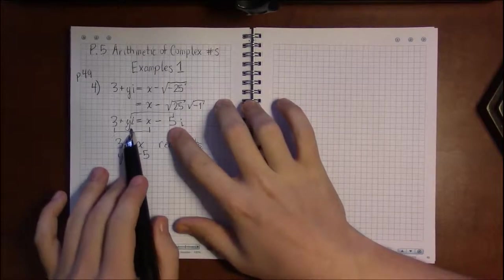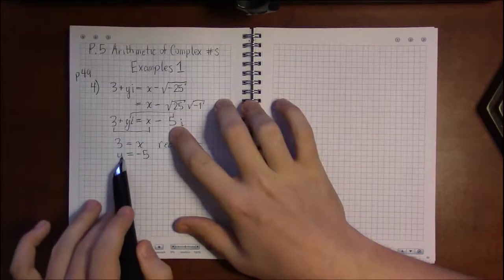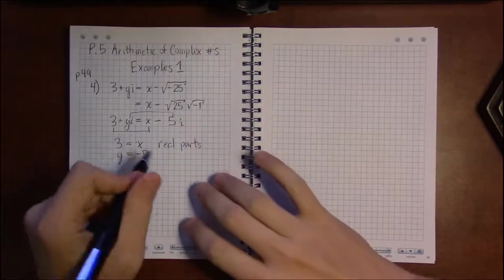They both have an i, so we don't need to worry about equating that. We could just divide the i off. What we need to have be equal is the y and the minus 5.